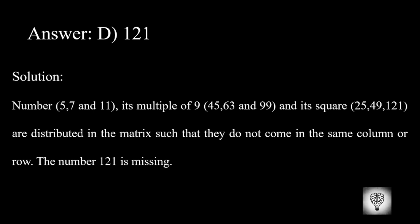The correct answer is 121. The numbers 5, 7, and 11 are multiplied by 9, giving 45, 63, and 99. Their squares — 25, 49, and 121 — are distributed in the matrix such that they do not appear in the same column or row. The number 121 is the missing value.